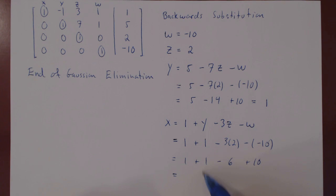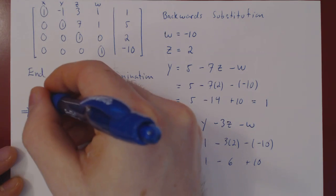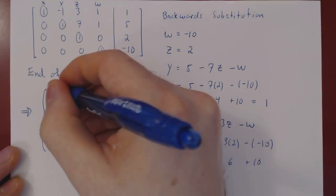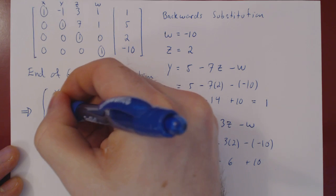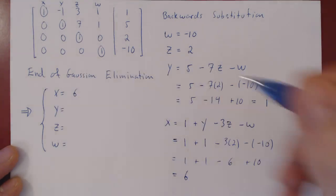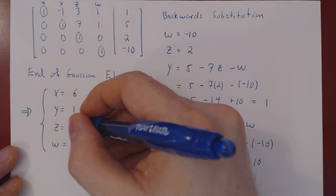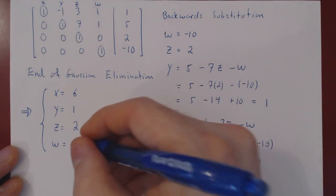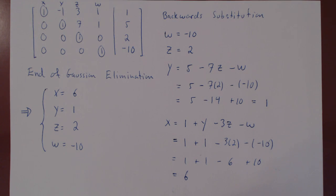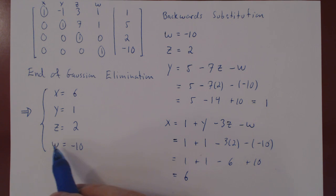1 + 1 = 2, minus 6 = -4, plus 10 = positive six. So x = 6. We now have our unique solution. In the proper order: x = 6, y = 1, z = 2, and w = -10.